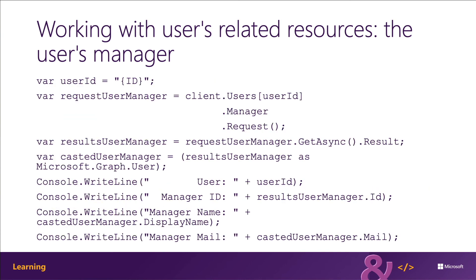Here you can see a code sample that demonstrates how this works. First, I'm defining the user ID and getting a request for the current user's manager. I'm then going to get the user manager and from there, try to cast the user manager as a user object. Then I'm going to write out the properties on that user: their ID, the ID of the manager, the manager's display name, and their email address.